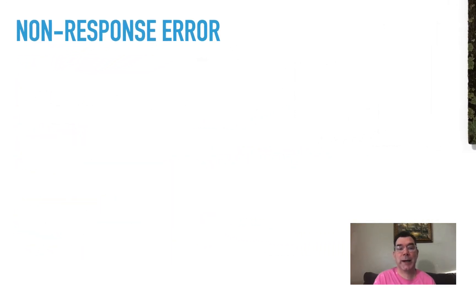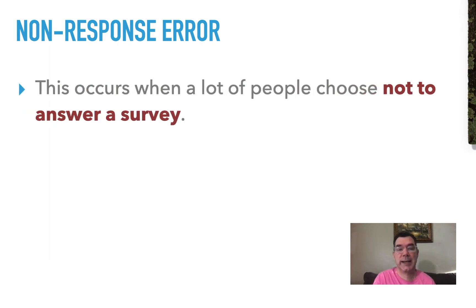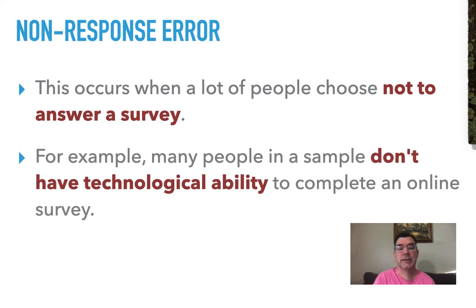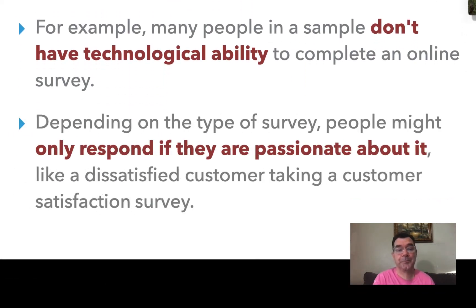The second kind of error that you might encounter is a non-response error, and that's exactly what it says — people choose not to answer your survey for one reason or another. Sometimes they don't have the ability to do it because if you are conducting an online survey, they might not have the technological ability to answer that survey. Also, it might be the kind of survey where they're really not passionate about the topic or they don't know a lot about the topic, so they might be less inclined to answer your survey.